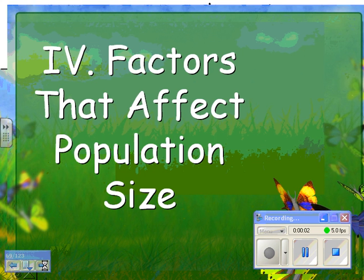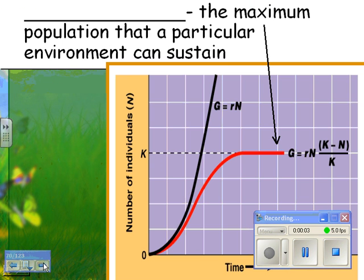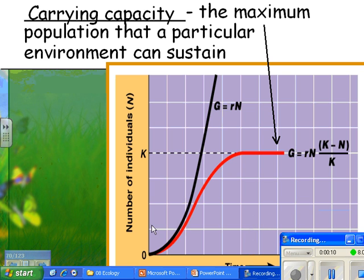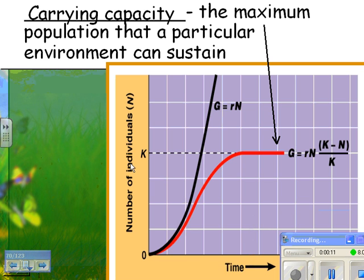Factors that affect population size. First, I want to define carrying capacity — it's the maximum population that a particular environment can sustain. For example, if you have number of individuals on the y-axis and time on the x-axis, if the population starts out very small it's going to increase over time, and then at some point the population should level off. And so this would be your carrying capacity.